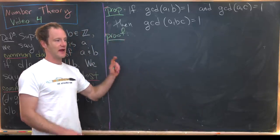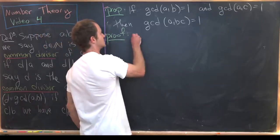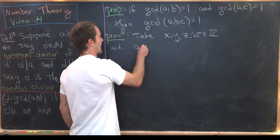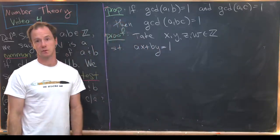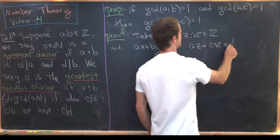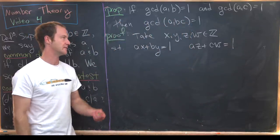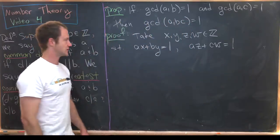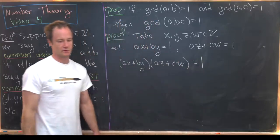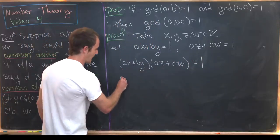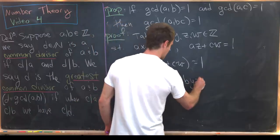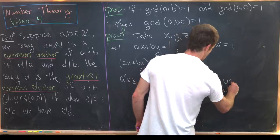We'll use the theorem and corollary we just went over. Take integers x, y, z, and w such that ax plus by equals one (since GCD(a,b)=1, by that theorem) and az plus cw equals one (since GCD(a,c)=1). Now multiply both sides of these equations together: (ax plus by)(az plus cw) equals one times one equals one. Multiplying out gives a²xz plus acxw plus abyz plus bc·yw equals one.